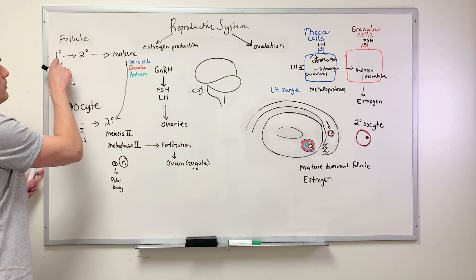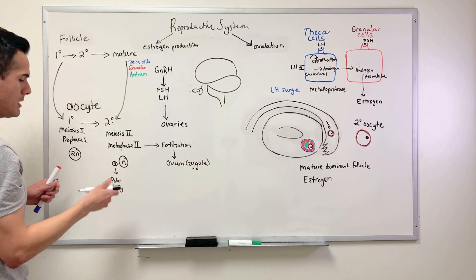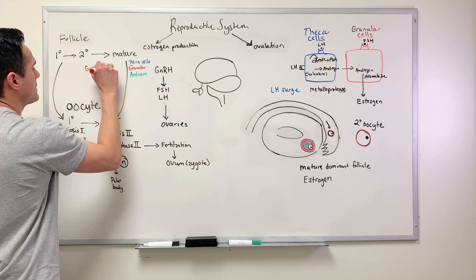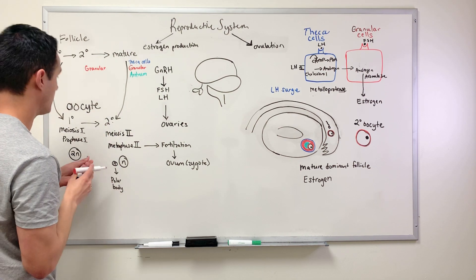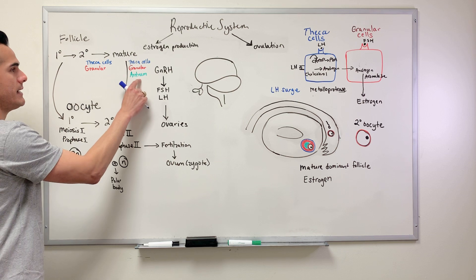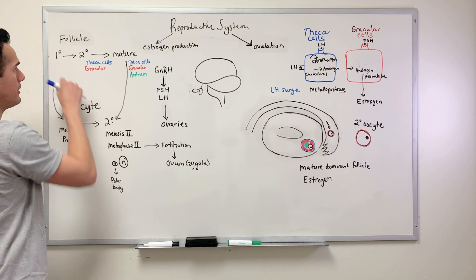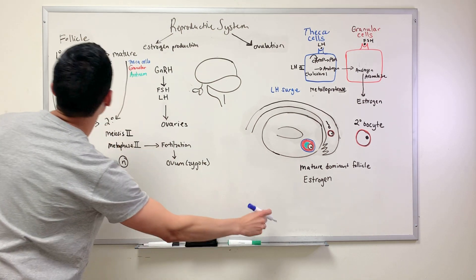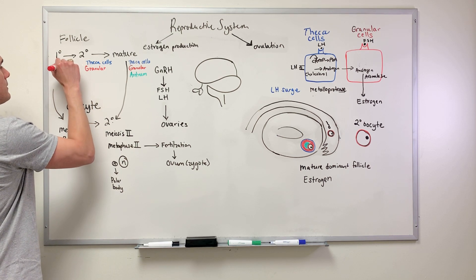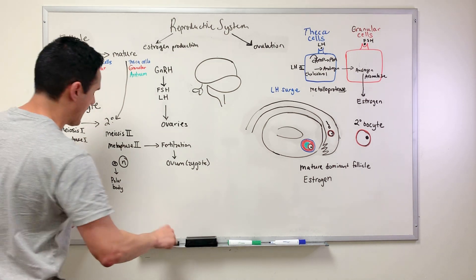The difference between primary and secondary follicles relates to their structural components. The secondary follicle contains both granular cells and theca cells but does not contain the antrum. The primary follicle only contains a single layer of granular cells.